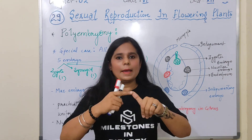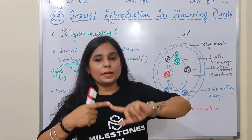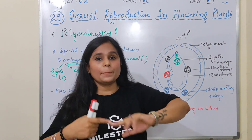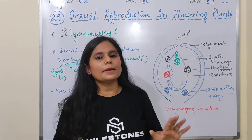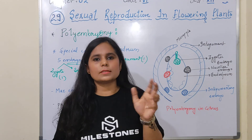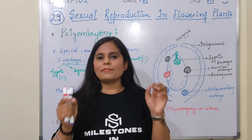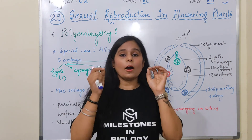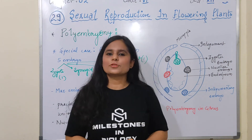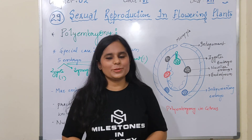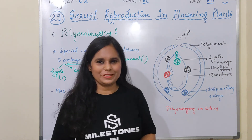So to summarize what you need to understand: apomixis, polyembryony, parthenocarpy, and parthenogenesis — all these topics are interrelated with each other. You have to understand all of them very carefully. See you in my next video. Till then, keep learning and be safe.